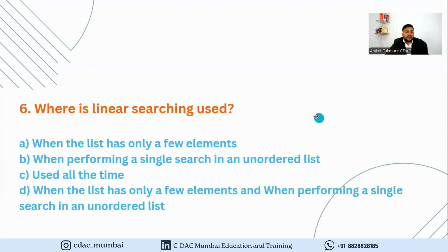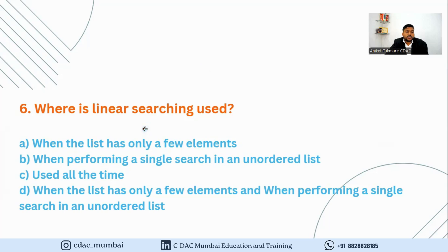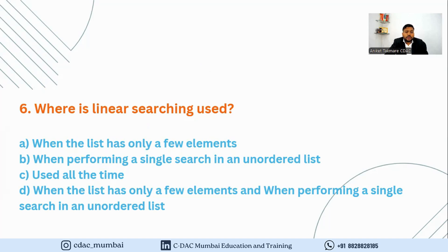The next example asks: where is linear searching used? In data structures, there are two types of searching: linear search and binary search. Linear search is used on an unsorted list, while binary search is used on a sorted list. The correct option is D: when the list has only a few elements and when performing a single search in an unordered list.